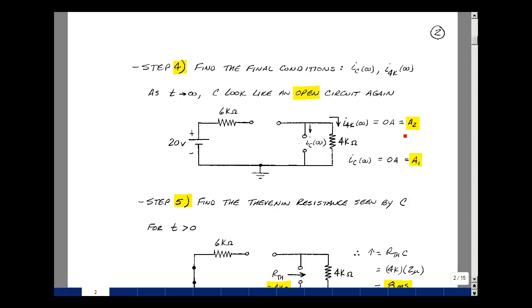I've got 0 amps, that's going to be a2 plus b2 times e to the minus infinity, which is going to be equal to a2. Same is true for the capacitor current, since it's an open circuit in steady state, it'll also be 0. That'll be the value of a1.